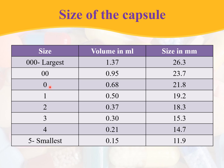Size 0 can hold 0.68 ml and measures 21.8 mm. The next is size 00, which can hold 0.95 ml and measures 23.7 mm. Finally, triple 0 is the largest size for human consumption; it can contain up to 1.37 ml and measures 26.3 mm, which is 2.63 cm.